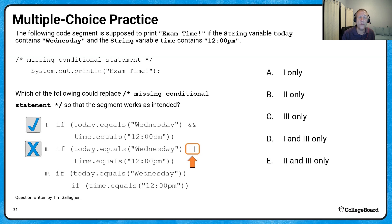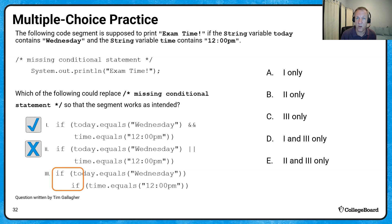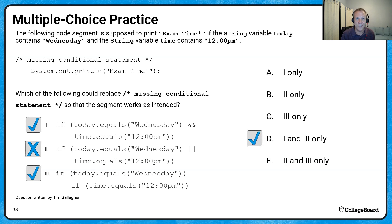The third option uses two nested if statements — an if inside an if. If today.equals('Wednesday'), and then another if: if time.equals('12 p.m.'), the only way to reach the print statement is if both evaluate to true. So that works as well. Options one and three both work, so the answer is D.